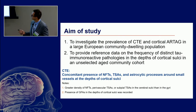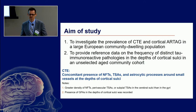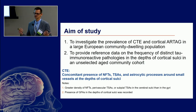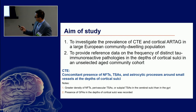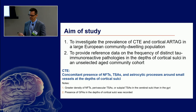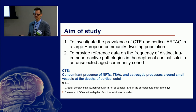The aim is very simple: to investigate whether we can find CTE pathology in an unselected community population. Just imagine a district in Vienna where persons above 75 were examined, irrespective of whether they had dementia or not. Our aim was also to provide reference data on tau pathologies in the depth of the sulci, so that future studies can use this as a reference.